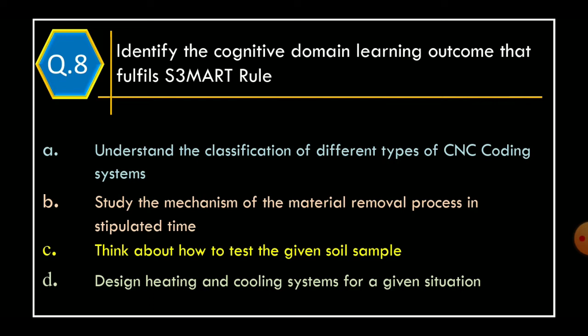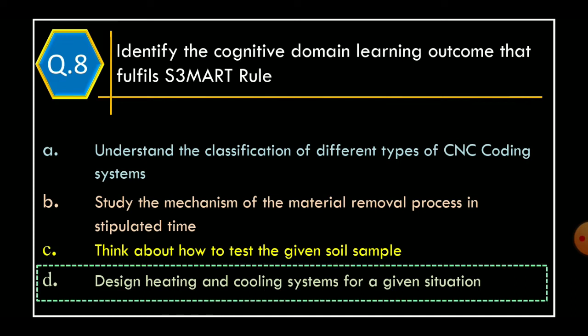Question 8: Identify the cognitive domain learning outcome that fulfills the S3MART rule. Option A: Understand the classification of different types of CNC coding systems; Option B: Study the mechanism of material removal process in stipulated time; Option C: Think about how to test the given soil sample; Option D: Design heating and cooling system for a given situation. The correct option is Option D: Design heating and cooling system for a given situation.